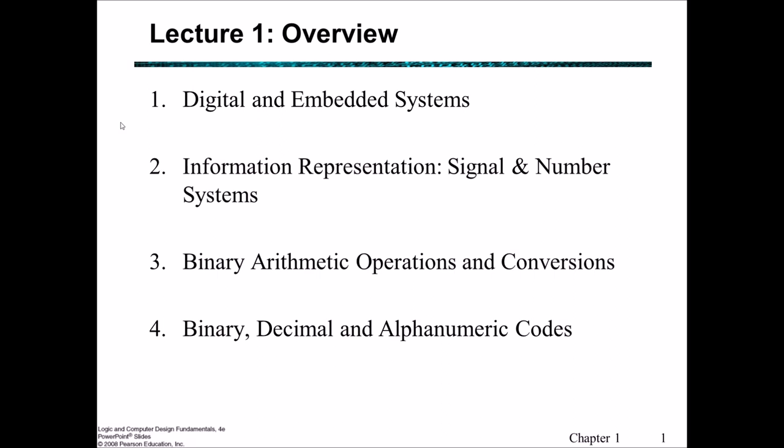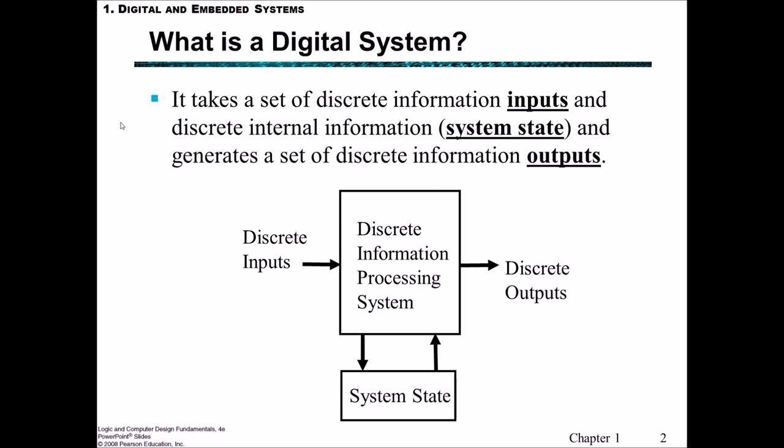So let's get into the first part which is digital and embedded systems. What is a digital system? In general, a digital system is one that takes in some sort of discrete information as inputs, has discrete internal information which we're calling the system state, and generates a set of discrete outputs. Inputs come in, the system holds its system state constantly being updated and checking it, and then it outputs something.